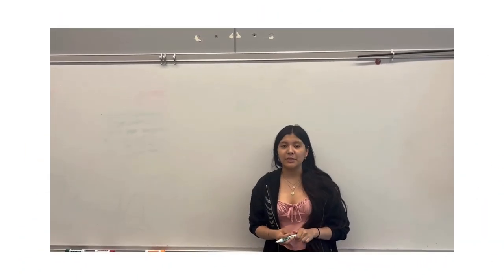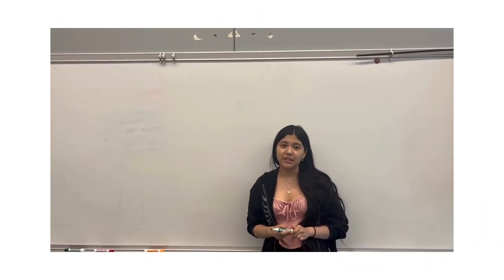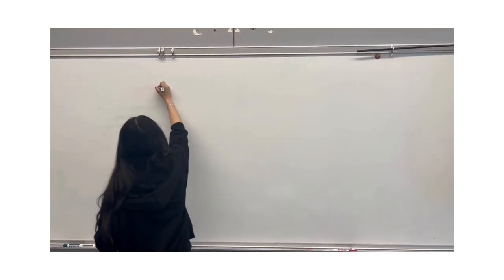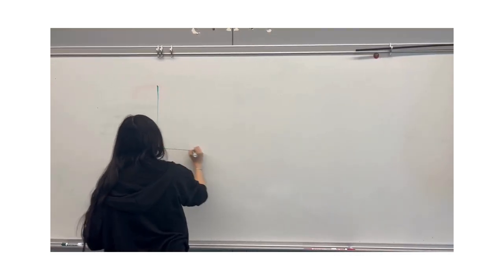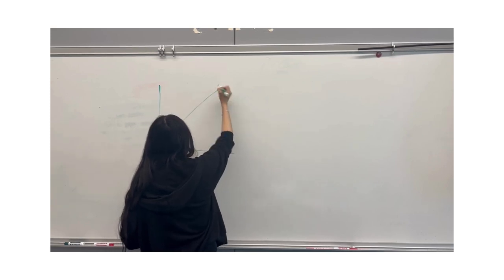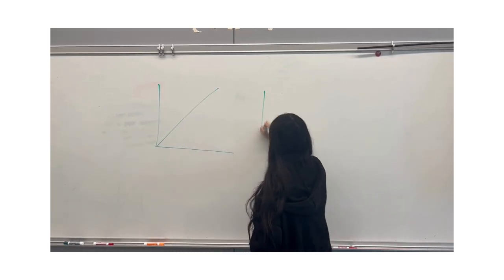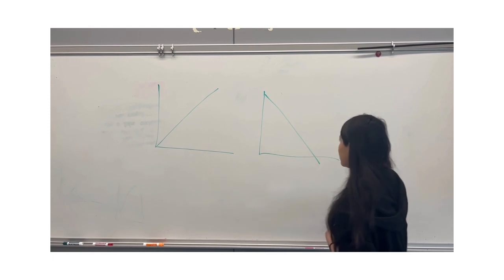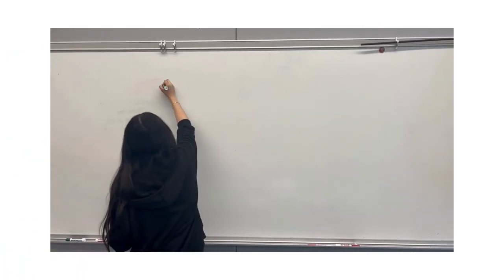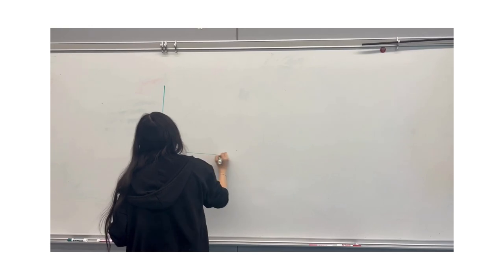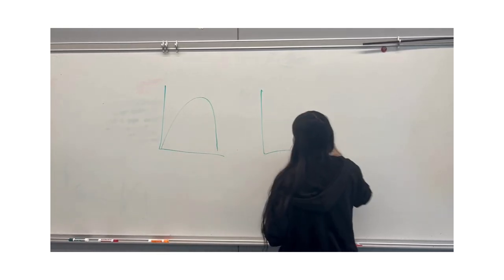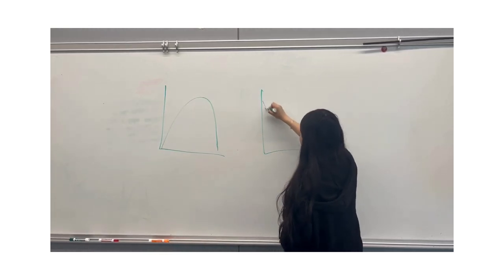First we're going to explain what a linear function and what a quadratic function is and what it looks like. A linear function looks like this and it's going up, and it looks like this if it's going downwards. So the linear is going in a straight line. A quadratic line would look like this if it's concave downwards, and it would look like this if it's concave up.